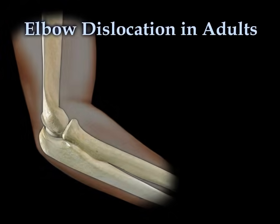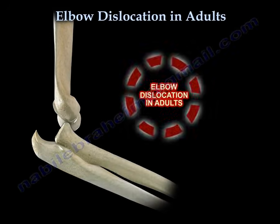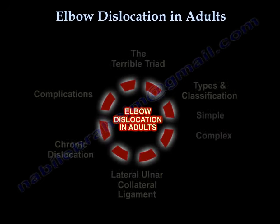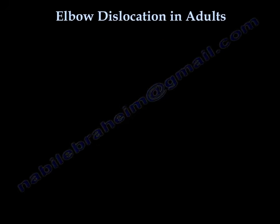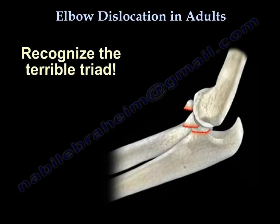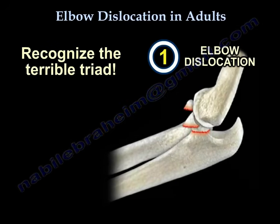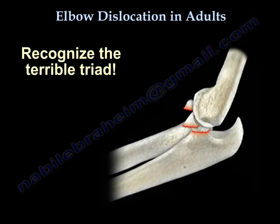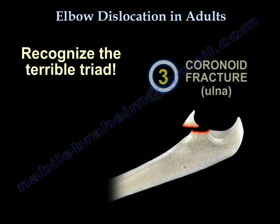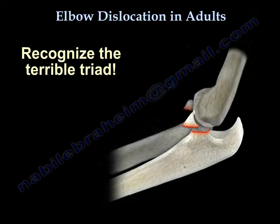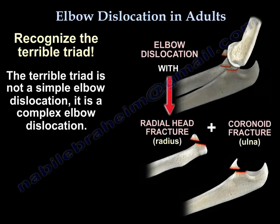Elbow dislocation in adults — there are some important points we need to recognize, starting with the terrible triad. The terrible triad consists of: number one, elbow dislocation; number two, radial head fracture; number three, coronoid fracture. The terrible triad is not a simple elbow dislocation — it is a complex elbow fracture-dislocation.